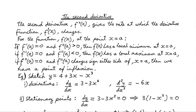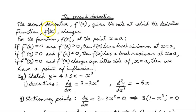In this video we're going to look at the second derivative. The second derivative, f double dash of x, gives the rate at which the derivative function f dash of x changes. Besides 'dash' we can also say 'prime', so f double prime and f prime — either one is fine.